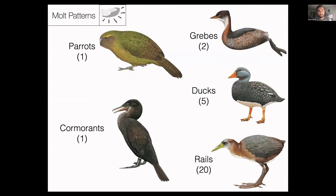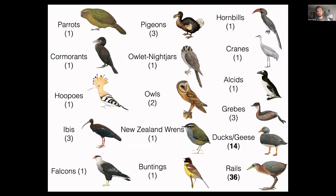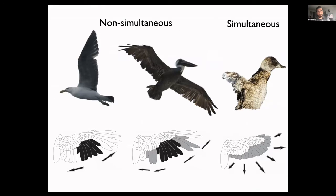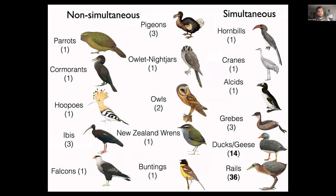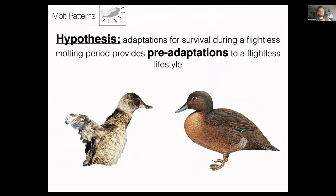Now the number of flightless birds — one parrot, a couple of grebes, some ducks, a cormorant, a bunch of rails — is small. But if we include species that went extinct in the past few thousand years, it's way more. Birds with simultaneous wing molt make up about 3% of species in the world, but when you look at just flightless species, it's almost 70% of them. So birds with simultaneous wing molt are way overrepresented among flightless species.